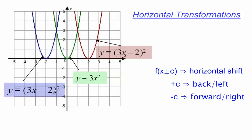This is really important. When I added 2, the parabola moved backwards. When I subtracted, it moved forward. So it's counterintuitive. The general rule: f(x ± c), where it's inside, internal to the function itself, results in a horizontal shift. If you're adding, it moves backwards to the left. If you're subtracting, it moves forward to the right.